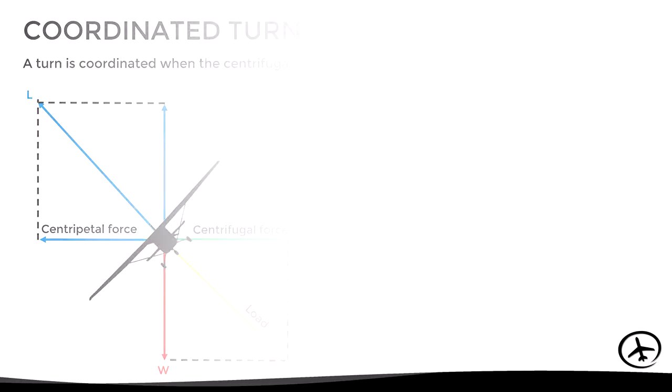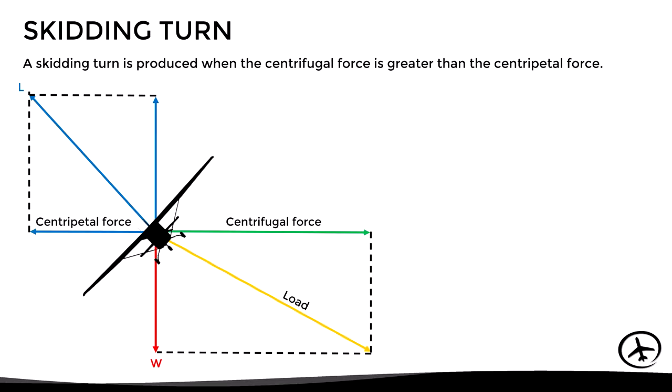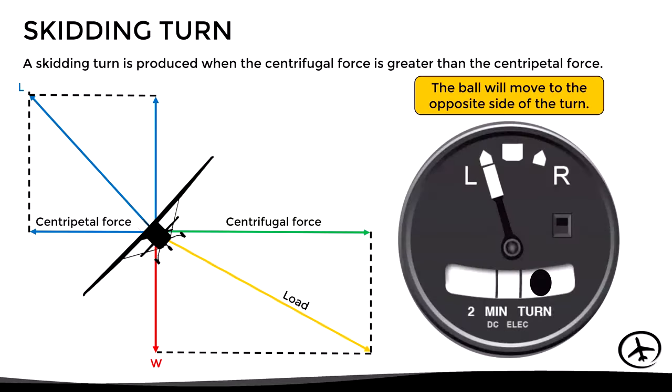Another possible situation is the skidding turn. A skidding turn is produced when the centrifugal force is greater than the centripetal force. In this case, the ball moves to the opposite side of the turn. For example, if the aircraft is turning to the left and the ball moves to the right, this is a skidding turn.